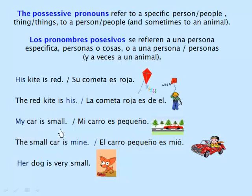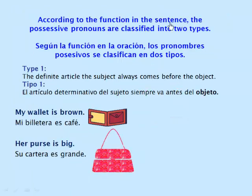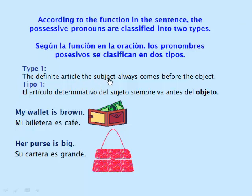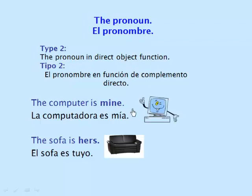My car is small; the small car is mine. Her dog is very small. According to the function in the sentence, the possessive pronouns are classified into two types. Type one — the possessive adjective: the subject always comes before the object. My wallet is brown. Her purse is big. Type two — the pronoun in direct object function. The computer is mine. The sofa is hers.